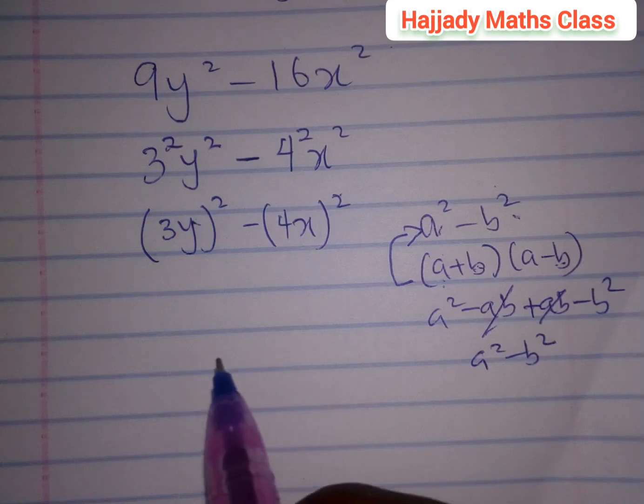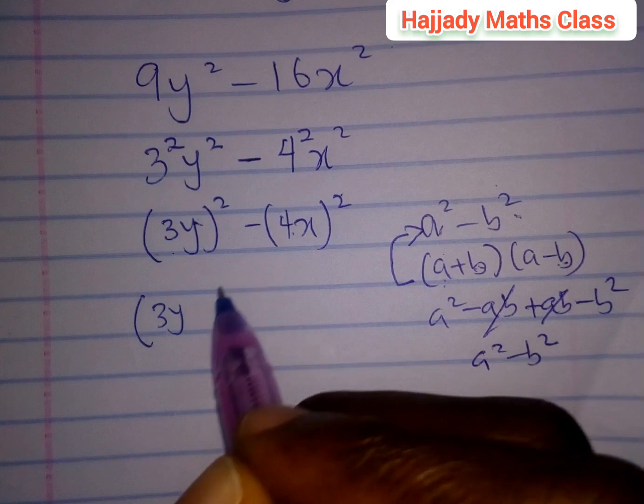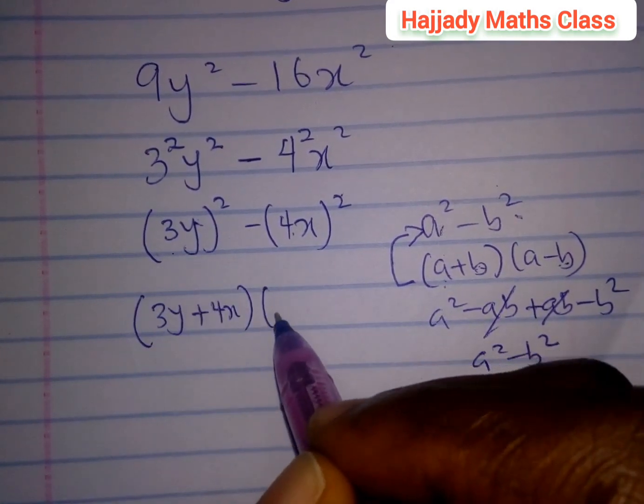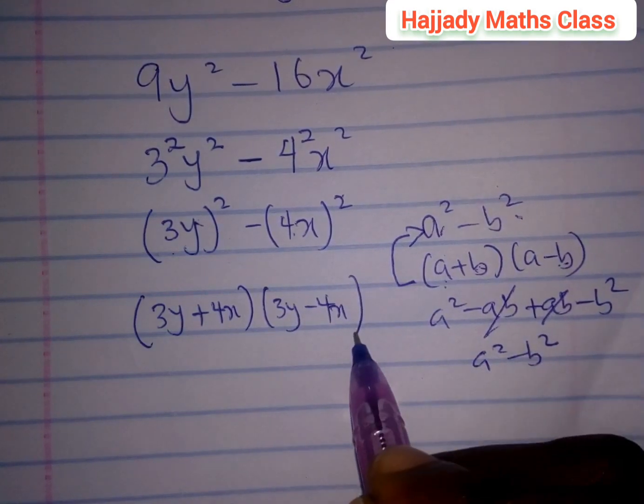Now, to proceed with that, this can be expressed as a, which is 3y, plus b, 4x, times a, 3y, minus 4x. So, that is the rule of difference of two squares.